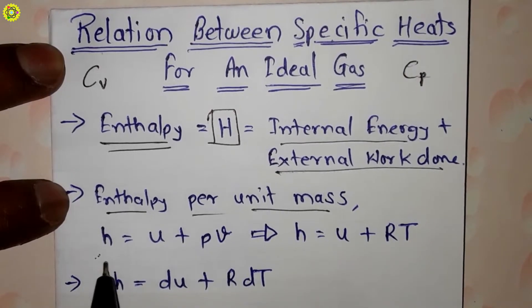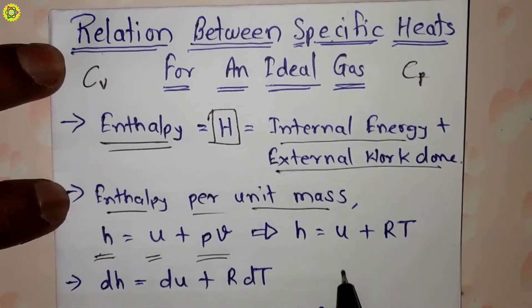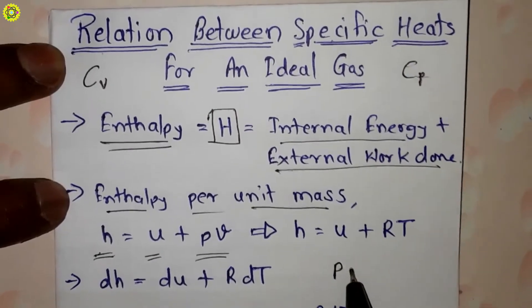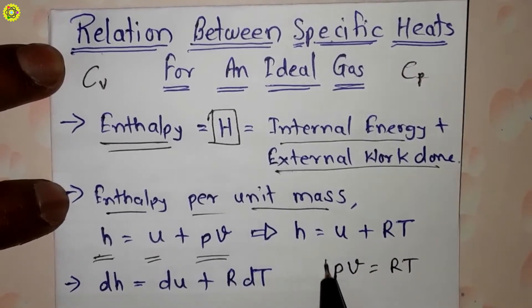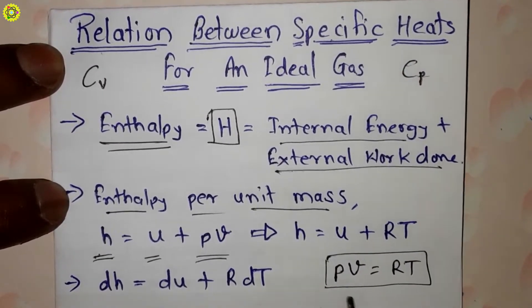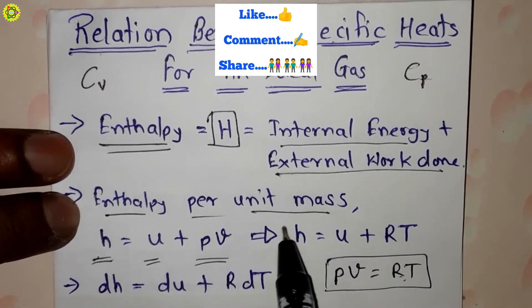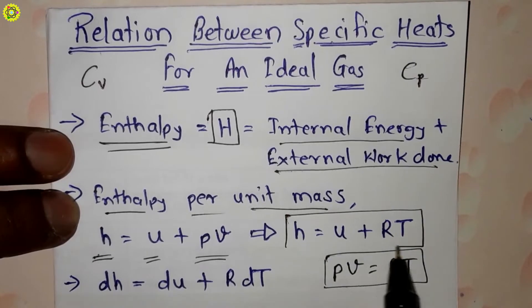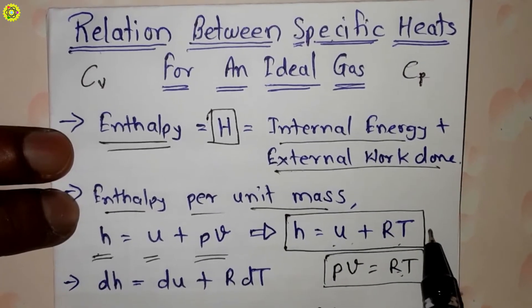h equals u plus pv, and this pv can be written as pv equals RT, this is our ideal gas equation. So we will replace pv by RT, so here we have now this equation: h equals u plus RT. Now we will differentiate this equation.